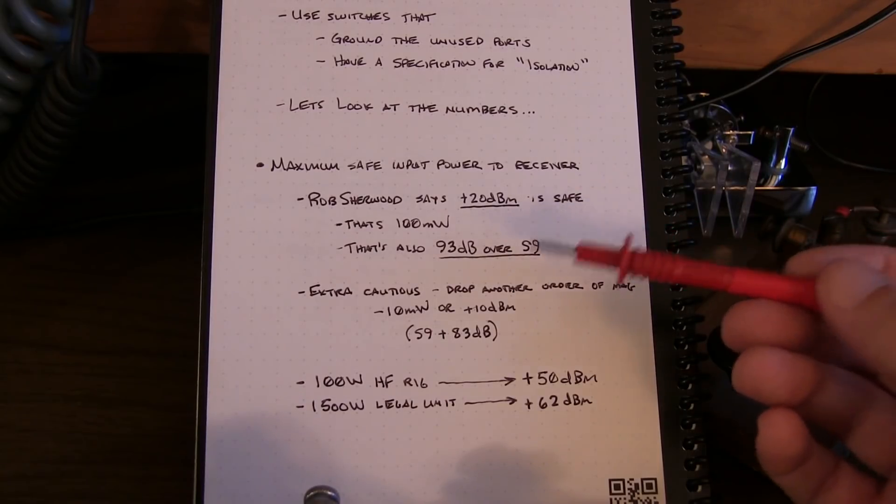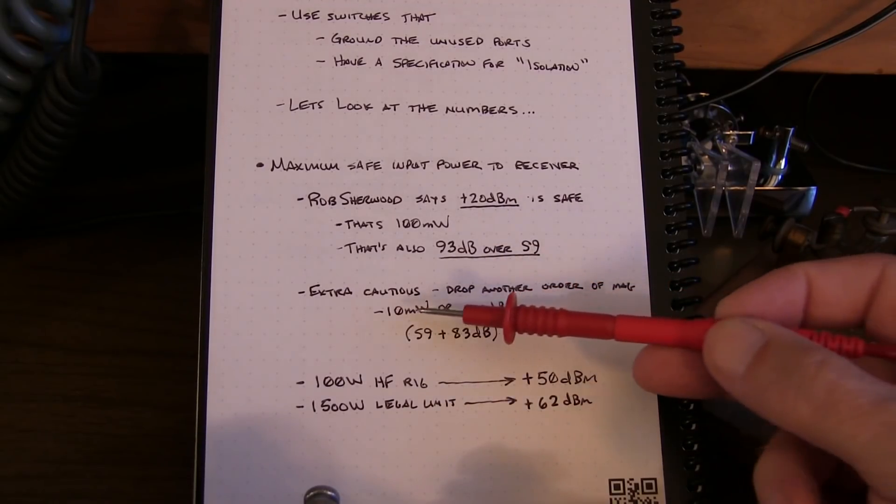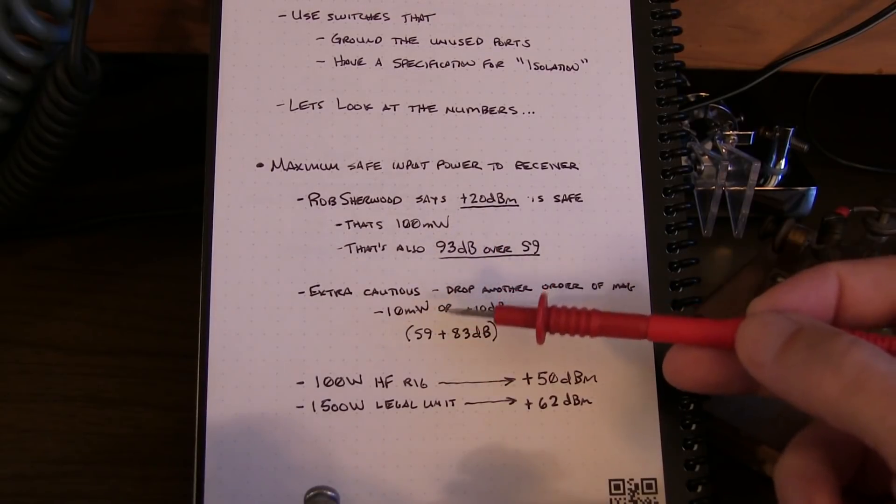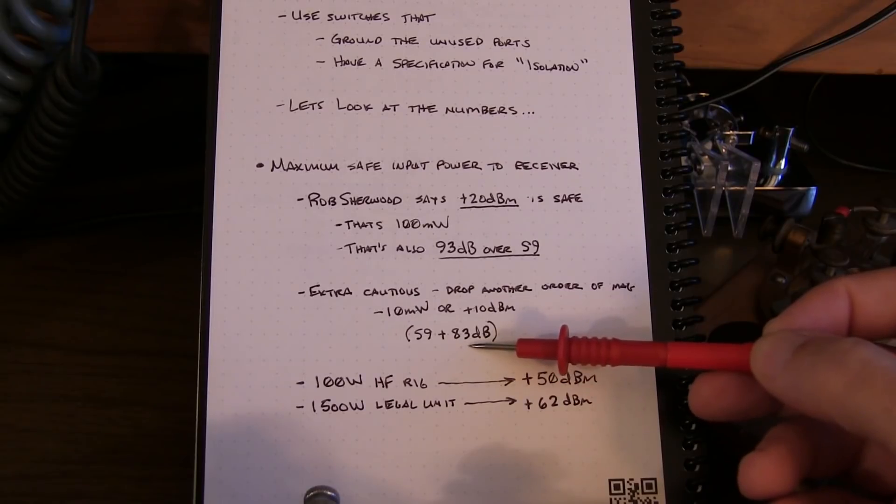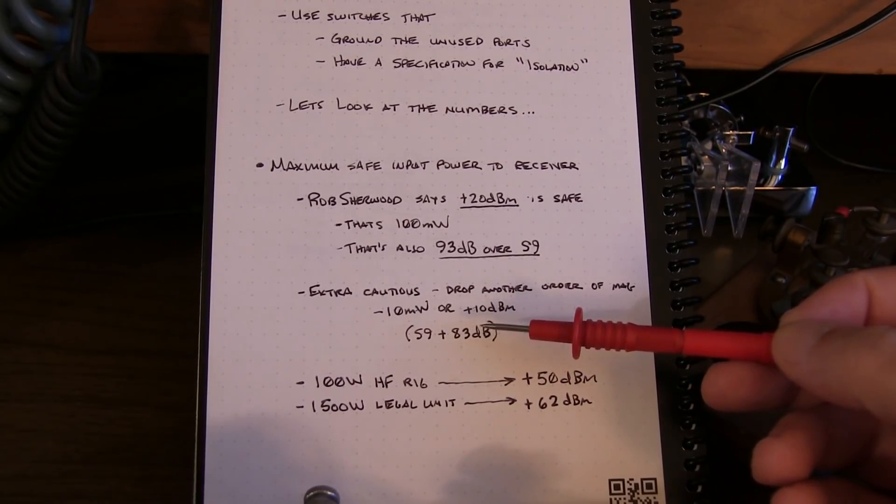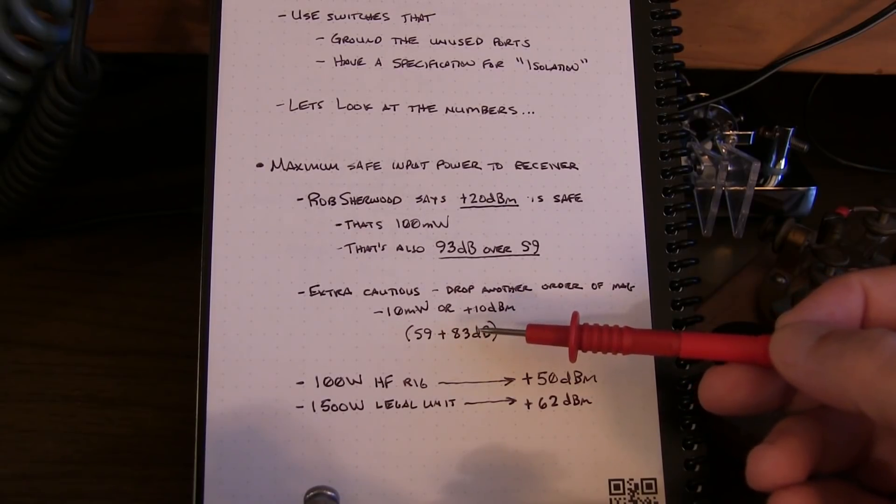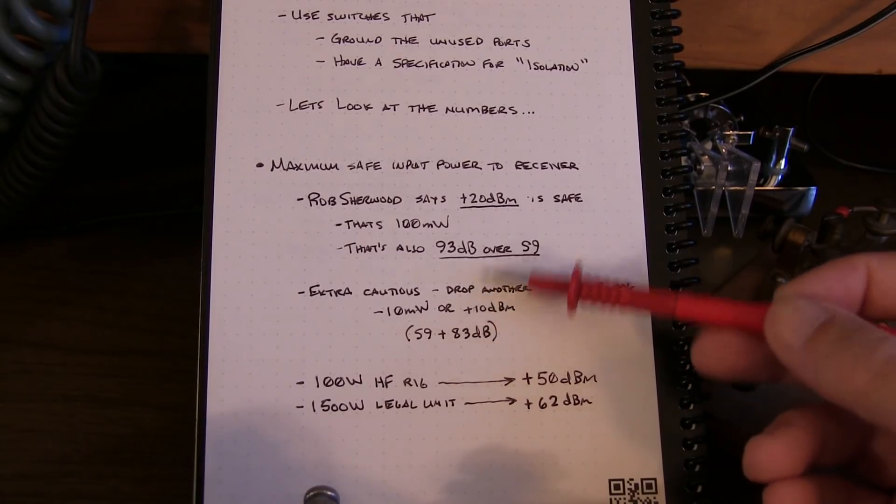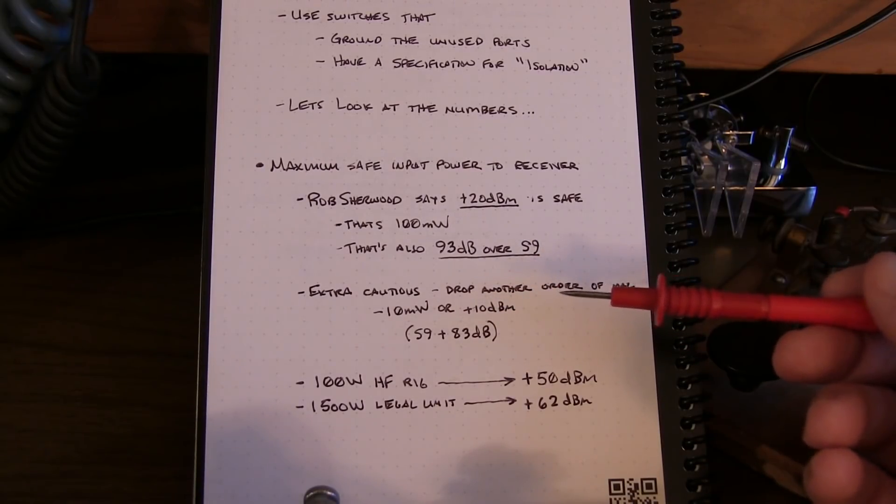Let's just be a little extra cautious and drop another 10 dB, another order of magnitude. So we'll drop that down to 10 milliwatts instead of 100. That's plus 10 dBm. That would be 83 dB over S9. Now if you look at the S meter on your rig, it may go up to S9 plus 40 or S9 plus 60 or something like that. So this is even beyond full scale of the S meter on your radio is perfectly safe in terms of not doing any damage to the receiver.